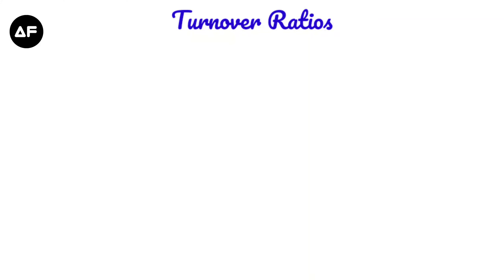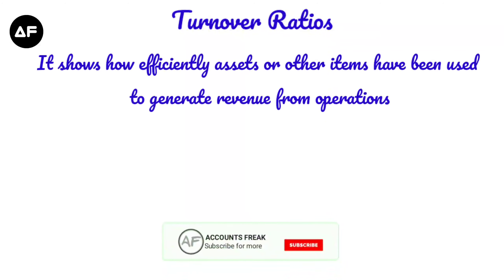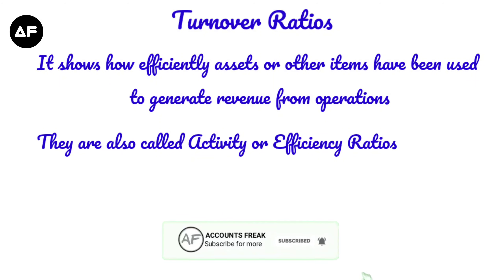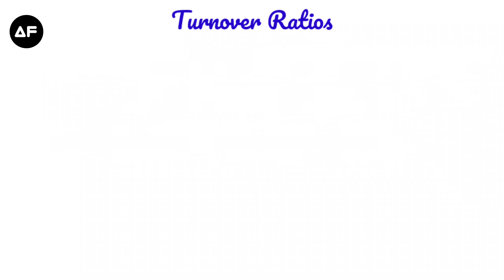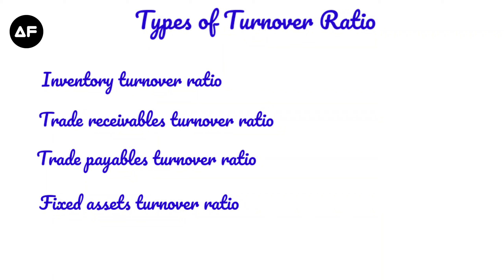Today we are going to discuss the turnover ratios. Turnover ratios show the efficiency of assets or other items that have been used to generate revenue from operations — how assets are being used to generate sales and income. There are four types of turnover ratio: inventory turnover ratio, trade receivable turnover ratio, trade payable turnover ratio, and fixed asset turnover ratio.